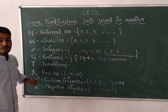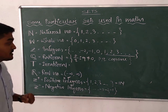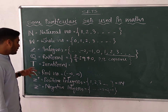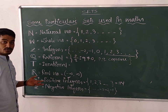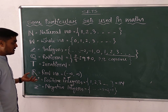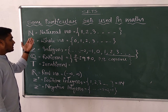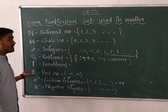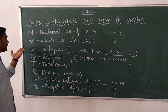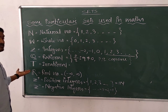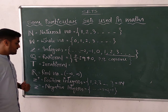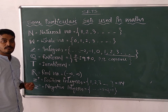In this way these sets are generally used. Two specific terms — non-negative and non-positive integers — are also there, which I will explain in the next video. Remember that these sets are generally used in our mathematics: natural numbers, whole numbers, set of integers, rational, irrational, real numbers, positive integers, and negative integers.